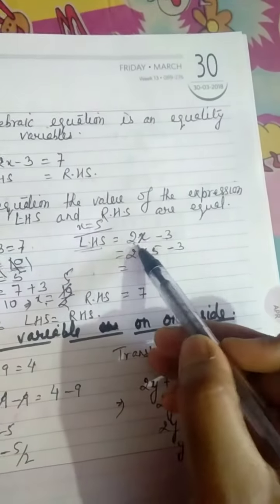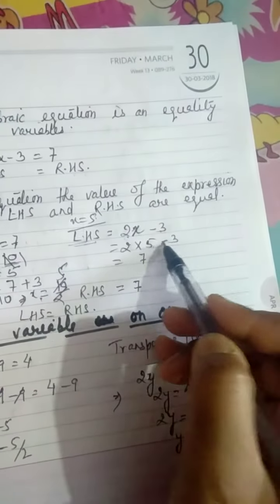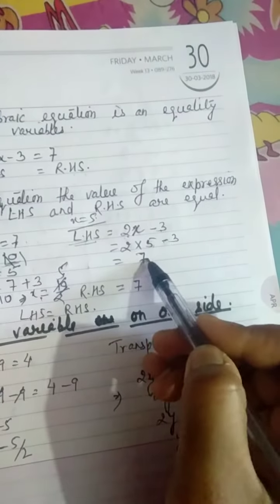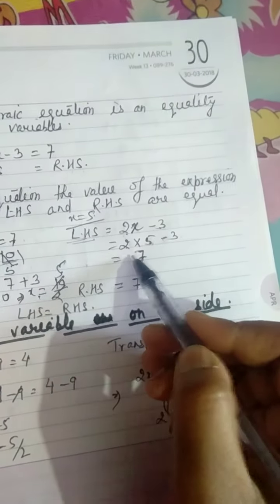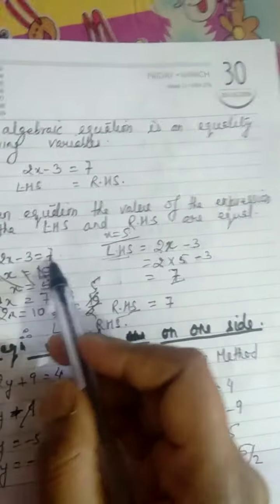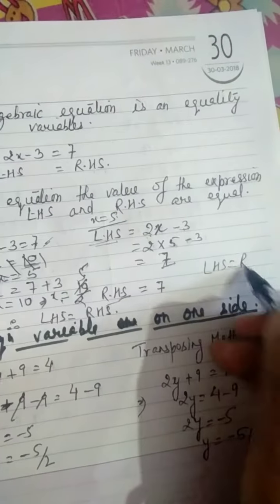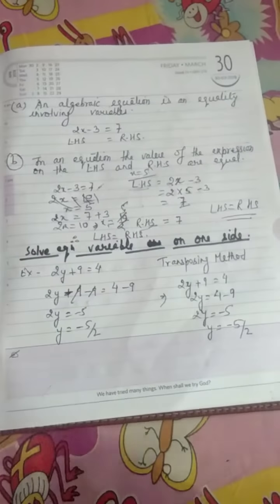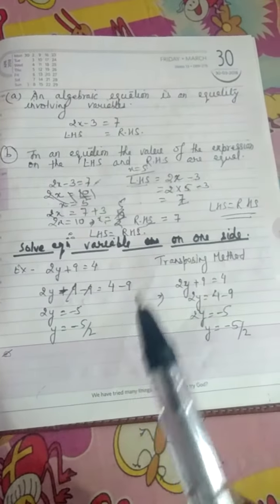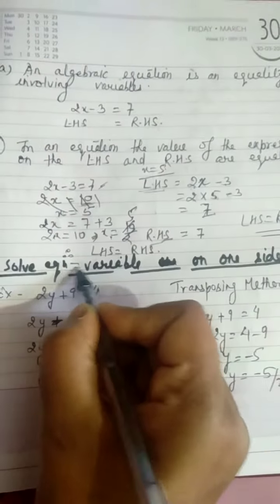We put x = 5 back into LHS: 2 into 5 minus 3 = 10 minus 3 = 7. And the RHS is 7. That means LHS is equal to RHS. Now we will solve equations with the variable on one side.